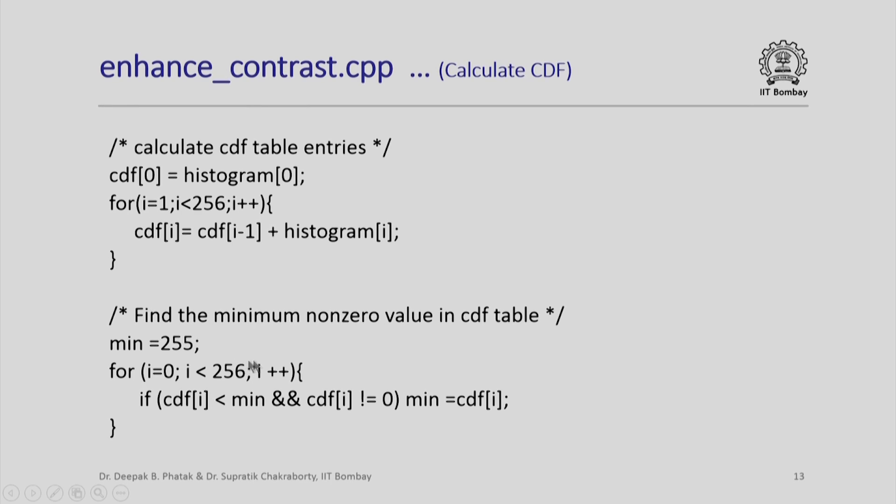Now, I find the minimum non-zero value in the cdf table. You remember that this is required in the formula for calculating the mapping of old value to a new value. I start with a minimum value of 255 which is actually the maximum value, scan the entire array of cdf and find out its minimum. Notice that I need to find minimum for non-zero value and therefore the condition cannot simply be cdf[i] is less than min. I must also logically AND it with cdf[i] not equal to zero. If this condition is satisfied, I put that value as the new minimum.